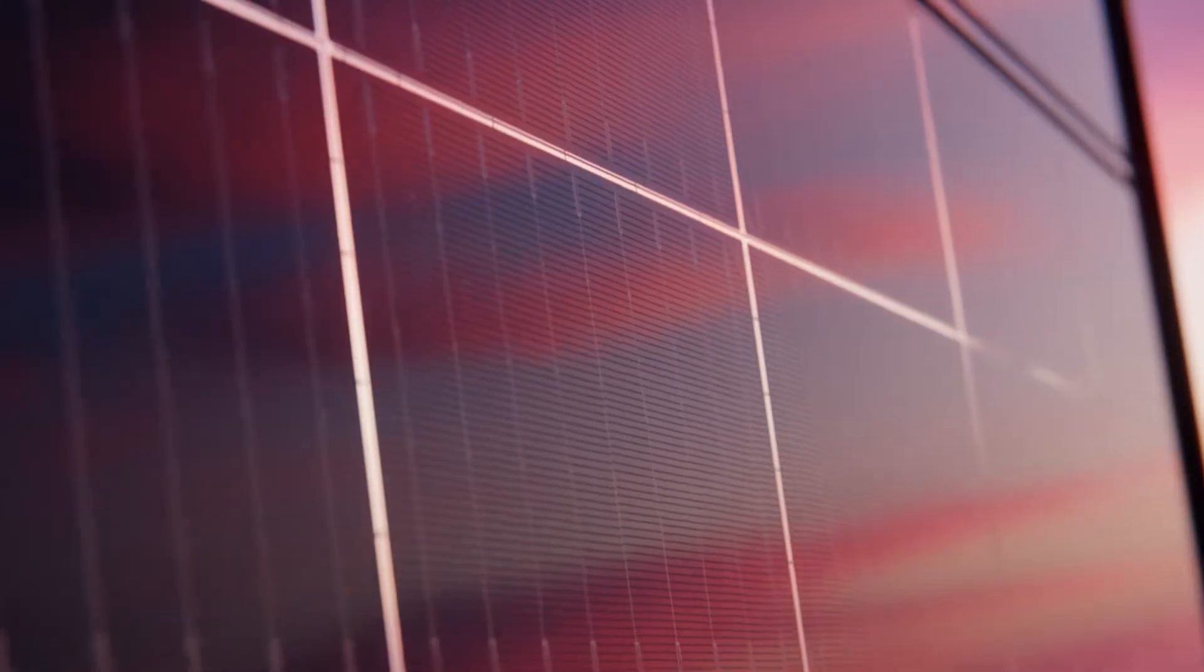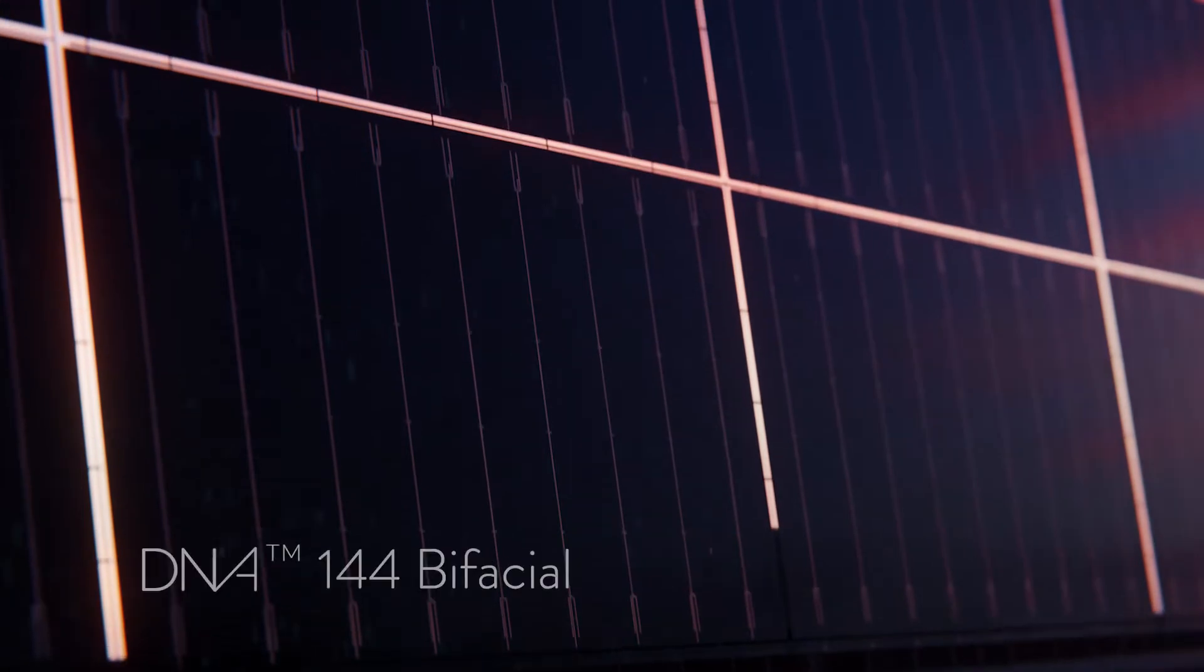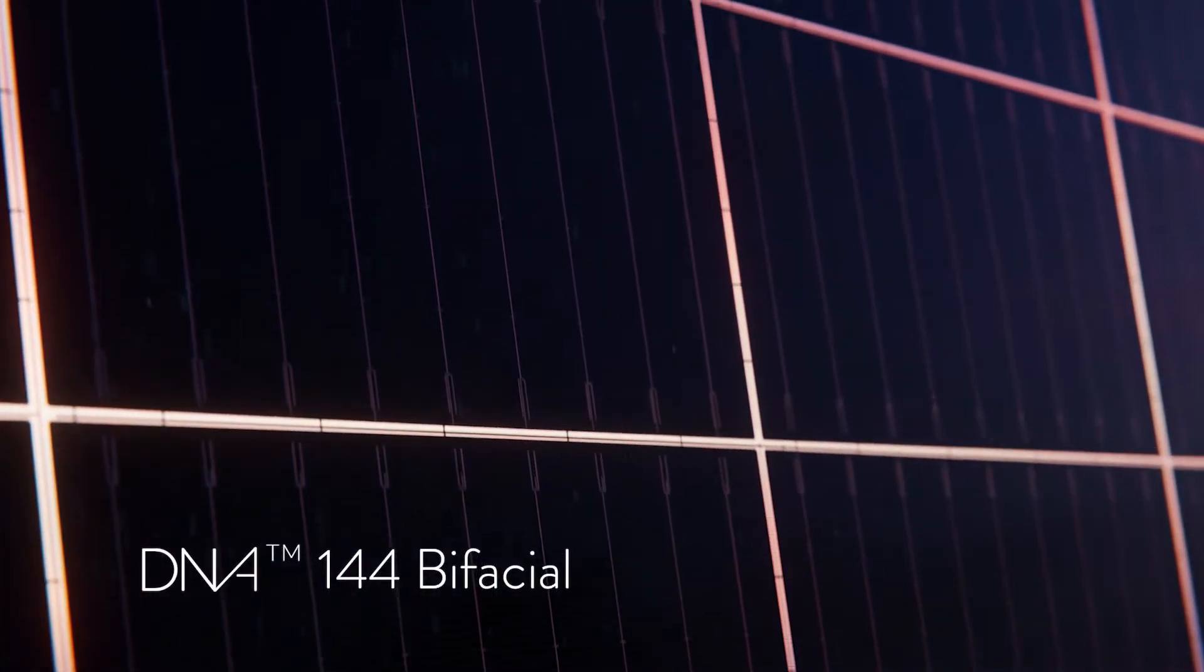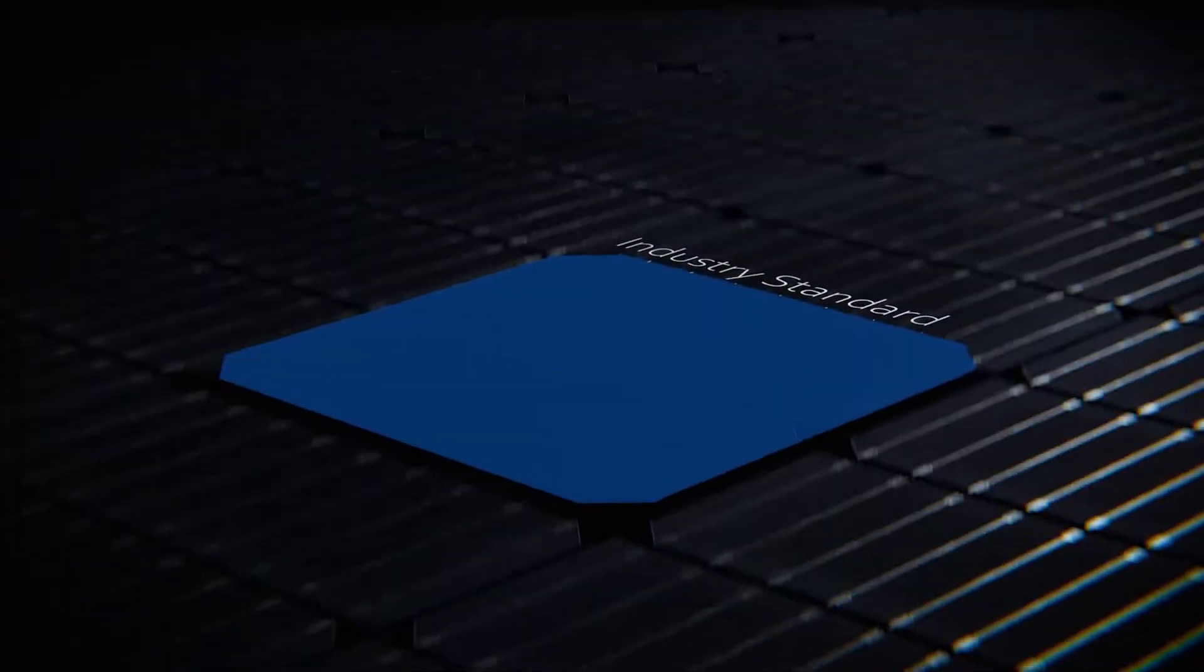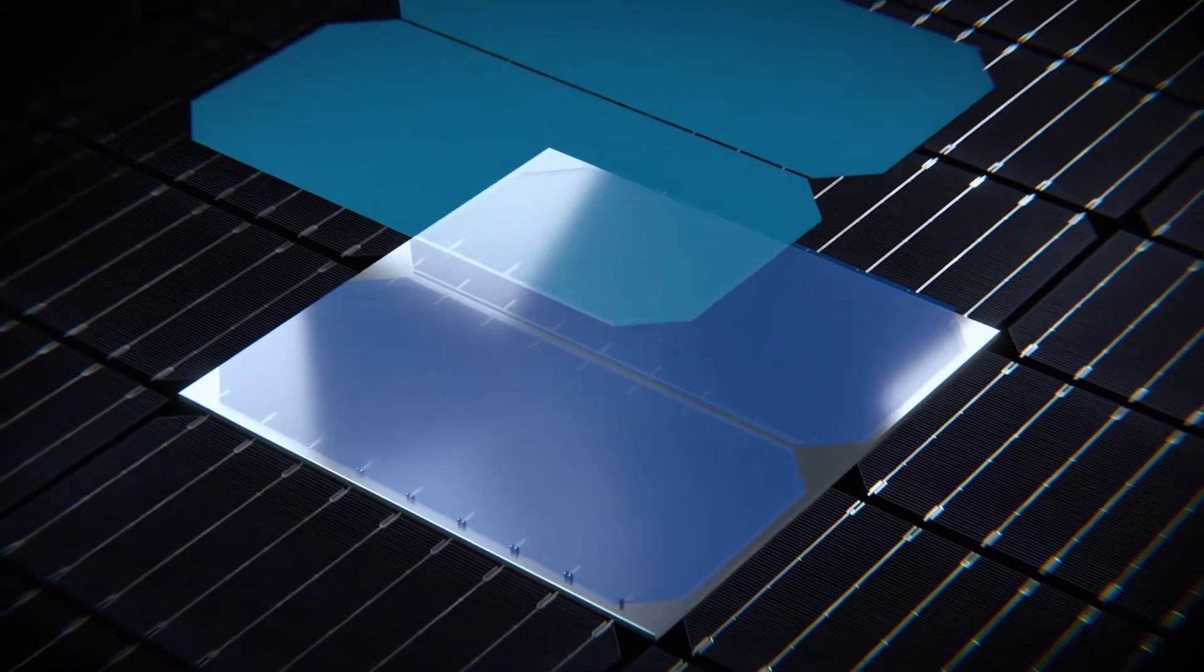By pairing advanced selective emitter PERC technology with thin film layers, we created a new industry-leading dual nano absorber DNA solar cell. Unlike standard solar cells, DNA solar cells are split for improved heat tolerance and have uniform passivated layers to increase photon capture.